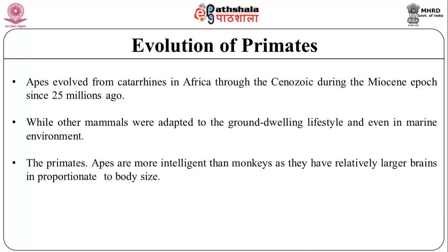Apes evolved from catarrhines in Africa through the Cenozoic during the Miocene Epoch, since 25 million years ago. Apes are generally larger than monkeys and do not have a tail. Traditionally, primates have been explained as the result of adaptation to arboreal living. While other mammals were adapted to ground-dwelling or even marine environments, apes are more intelligent than monkeys as they have relatively larger brains in proportion to body size.